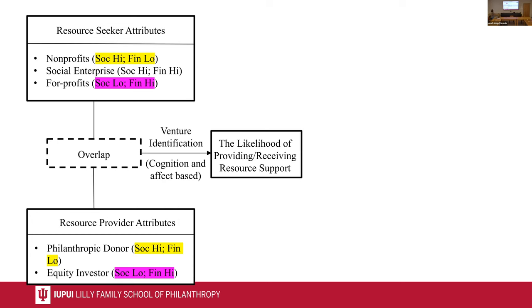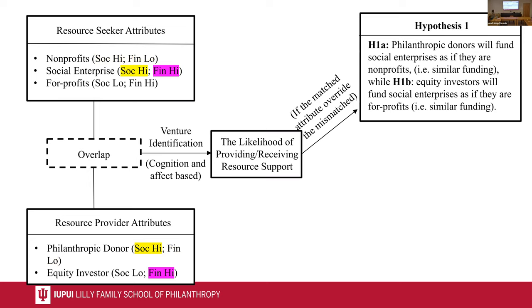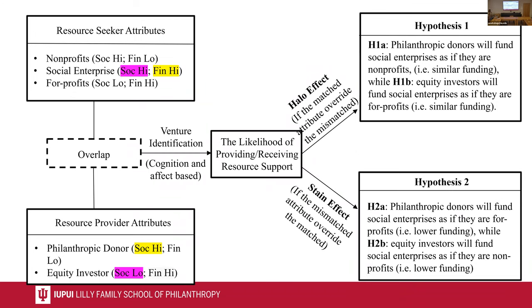In our study, resource seekers include non-profits, social enterprises, and for-profits. Resource providers include philanthropy donors and equity investors. There are both matched and mismatched attributes between philanthropy donors and social enterprises, and between equity investors and social enterprises. We hypothesize two effects: when matched attributes override mismatched ones, that leads to a halo effect — meaning philanthropy donors and equity investors will treat social enterprises similarly to their traditional counterparts.